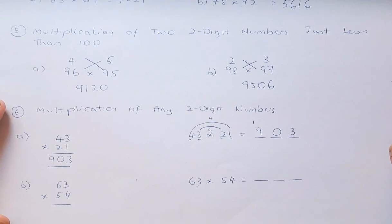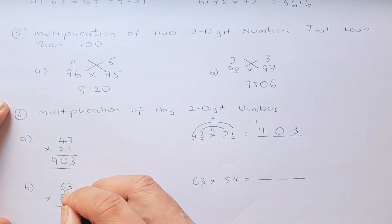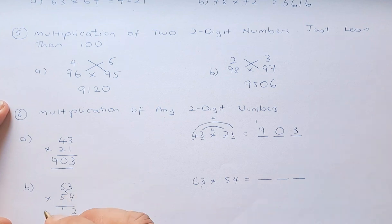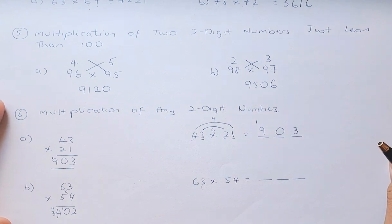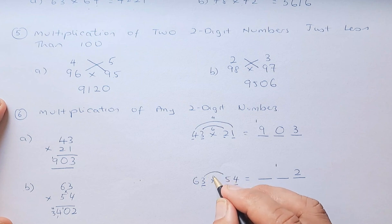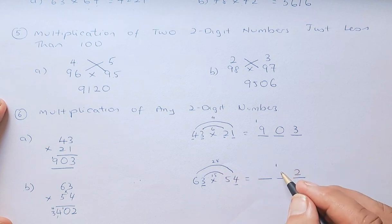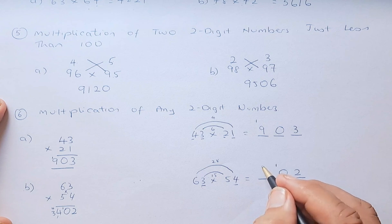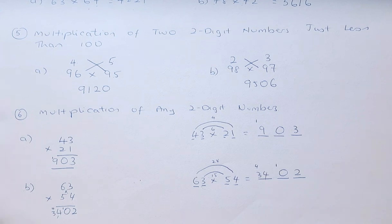Next example: 63 times 54. First, 3 times 4 is 12 — write 2, carry 1. Cross-multiply: 5 times 3 is 15, and 6 times 4 is 24; 15 plus 24 is 39, plus 1 is 40 — write 0, carry 4. Finally, 6 times 5 is 30, plus 4 is 34. The answer is 3,402. The rainbow method gives exactly the same result, just presented differently.